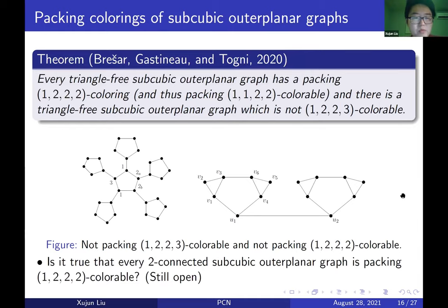If we remove the triangle-free condition, the graph is not 1-2-2-2 colorable. But what if we add the condition of 2-connectivity? This question is still open: is it true that every 2-connected subcubic outer planar graph is packing 1-2-2-2 colorable?